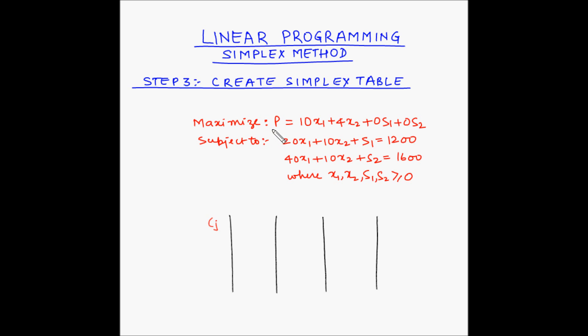So this is the objective function, p equals 10x1 plus 4x2 plus 0s1 plus 0s2. As we know, each unit of type A gear gives a profit of 10 rupees while each unit of type B gear gives a profit of 4 rupees. At the same time, we have assumed that the cost of unused capacity represented by the slack variables s1 and s2 is 0. Hence, we can fill these values in the simplex table.